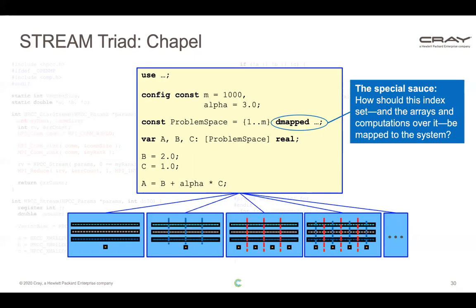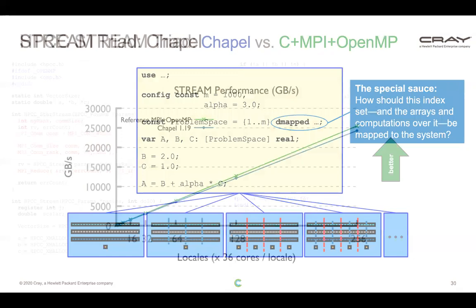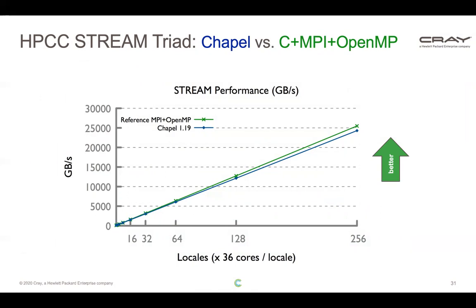Being a short code is nice, but if it isn't fast it probably doesn't matter for a parallel computational scientist. Chapel is not only succinct — it also results in very good performance. Here we have a performance graph where we're adding compute nodes, called locales in Chapel, along the x-axis, and performance on the y-axis. This goes out to about 18,000 cores, and I'm plotting Chapel in blue against the reference MPI plus OpenMP version in green — they're essentially neck and neck.